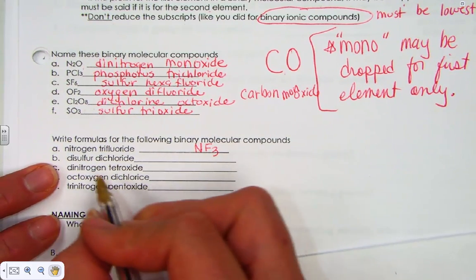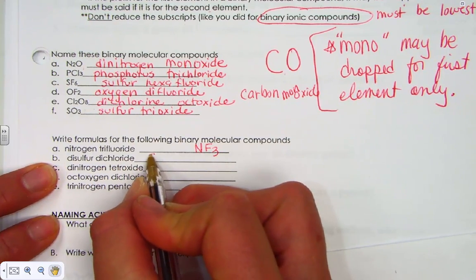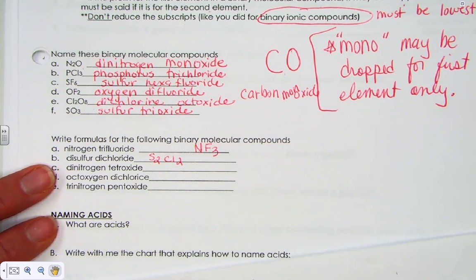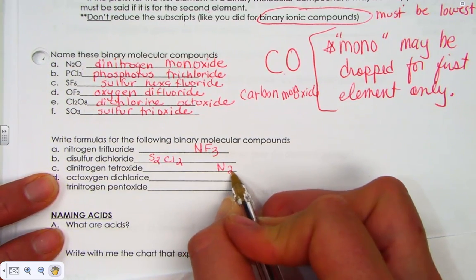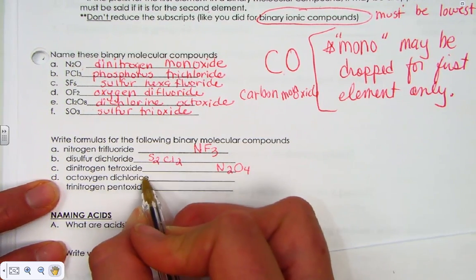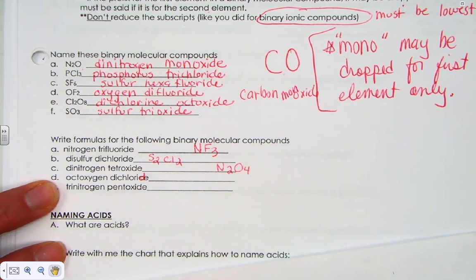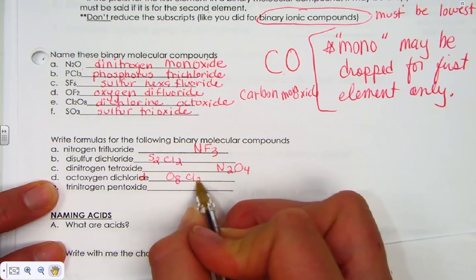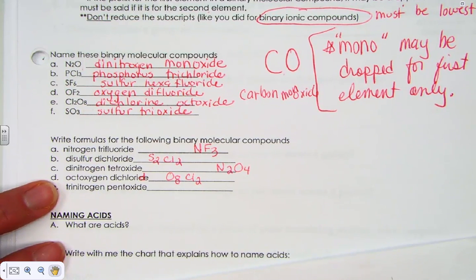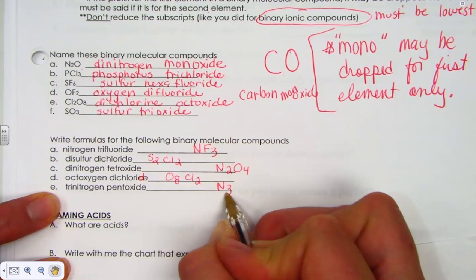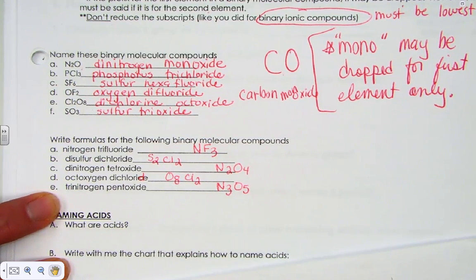Disulfur dichloride. S2Cl2. Dinitrogen tetroxide. N2O4. Octoxygen dichloride. Oops, there's a typo there. That's an I-D-E ending. Octoxygen. That's eight oxygens. Dichloride. Cl2. O8Cl2. Trinitrogen pentoxide. N3O5.